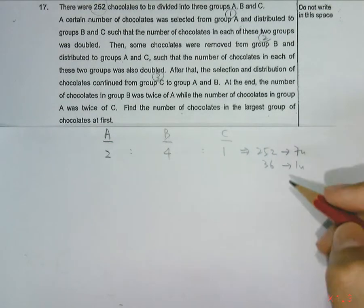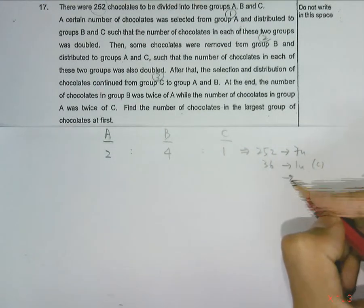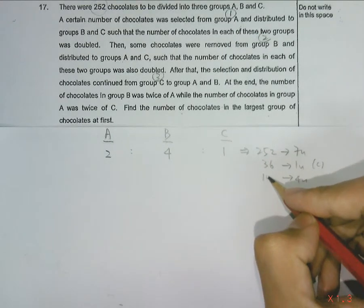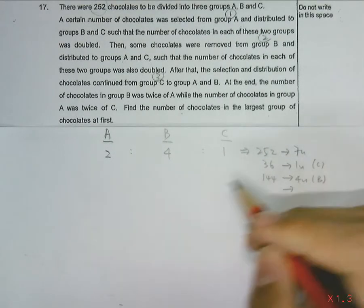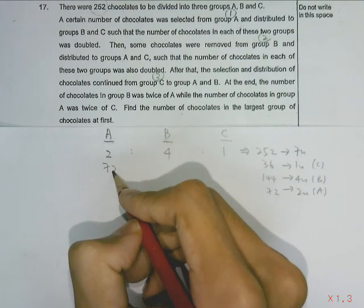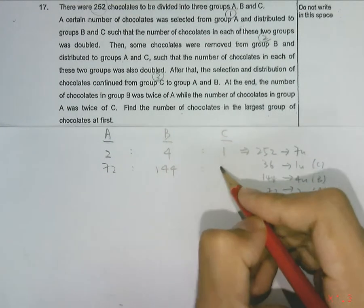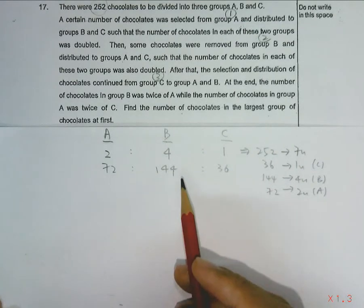From here, we can continue to find the number of chocolates each group has. Since B has 4 units, we can find that it has 144 chocolates. Since A has 2 units, we can find that it has 72 chocolates. So this is the number of chocolates each group has in the end.